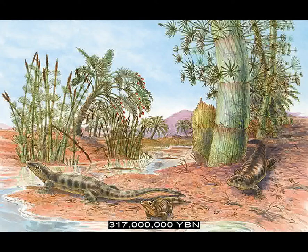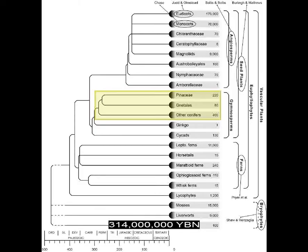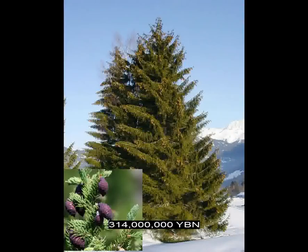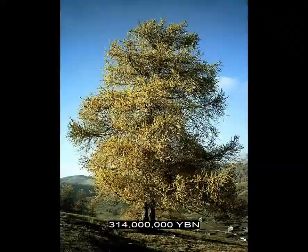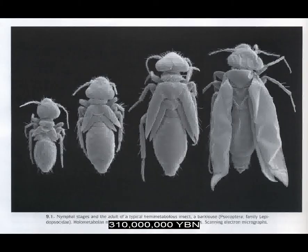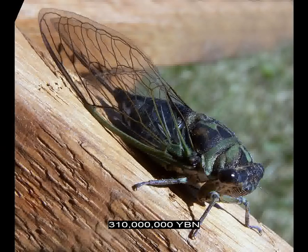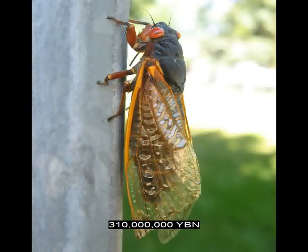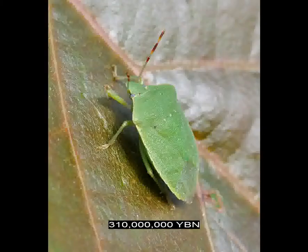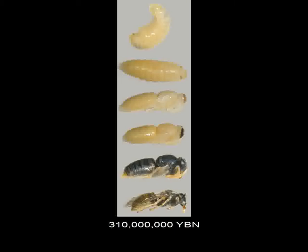The gymnosperms Pinophyta evolve—ancestor of the conifers, including pine, fir, spruce, redwood, cedar, juniper, hemlock, larch, yew, and cypress. The neoptera Paraneoptera evolve—ancestor of bark lice, true lice, thrips, and the hemiptera. The hemiptera have mouthparts adapted for piercing and sucking and include cicadas, aphids, and true bugs such as bedbugs and stink bugs. The neoptera Holometabola evolve—holometabolous insects that undergo complete metamorphosis. This is the ancestor of beetles, bees, true flies, and butterflies. The holometabolous insects account for nearly 85% of all insects. Unlike hemimetabolous insects, holometabolous insects have a morphologically reduced larval stage and acquire a completely new body during the pupal stage.